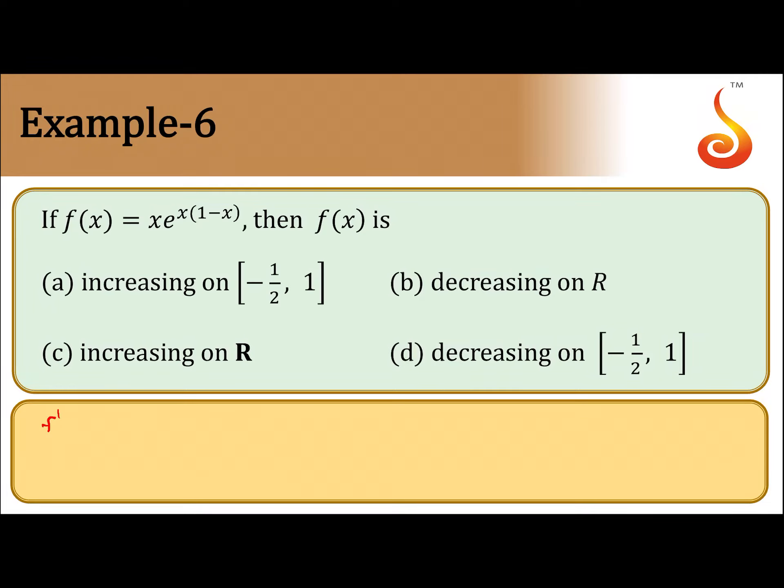Let us find f dash x. f dash x is equal to 1 into e to the power x into 1 minus x plus x into e to the power x into 1 minus x and derivative will be 1 minus 2x.